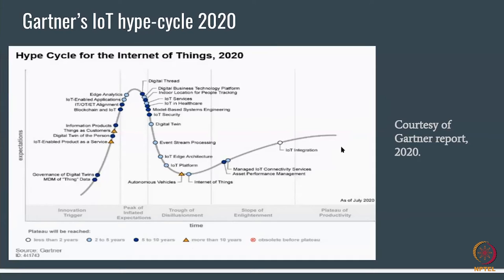IoT integration is already reaching a plateau. Technologies like edge computing, IoT-enabled applications, blockchain in IoT, IoT security, IoT services, healthcare, indoor location, and digital business are at various peak stages. Autonomous vehicles are the only technology predicted to take more than ten years, since navigating real roads anywhere in the world will take a really long time. Overall, IoT is set to be a very dominating class of technologies for the near future.